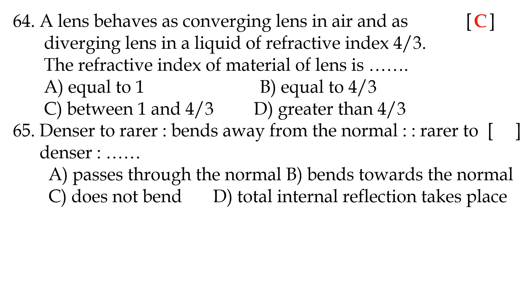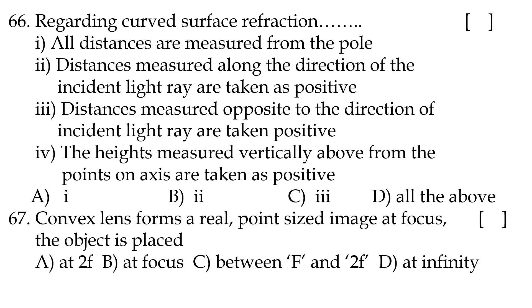Sixty-fifth question: denser to rarer causes bending away from the normal; as rarer to denser causes — option B, bends toward the normal. Sixty-sixth question: regarding curved surface refraction conventions — option D, all of the above: distances measured from the pole; along the direction of incident light are positive; opposite direction are negative; heights above the axis are positive.